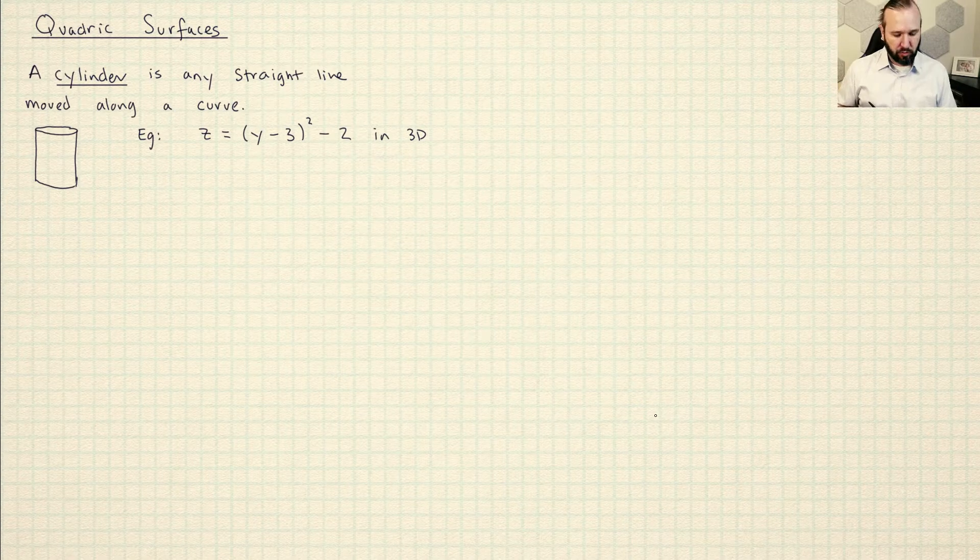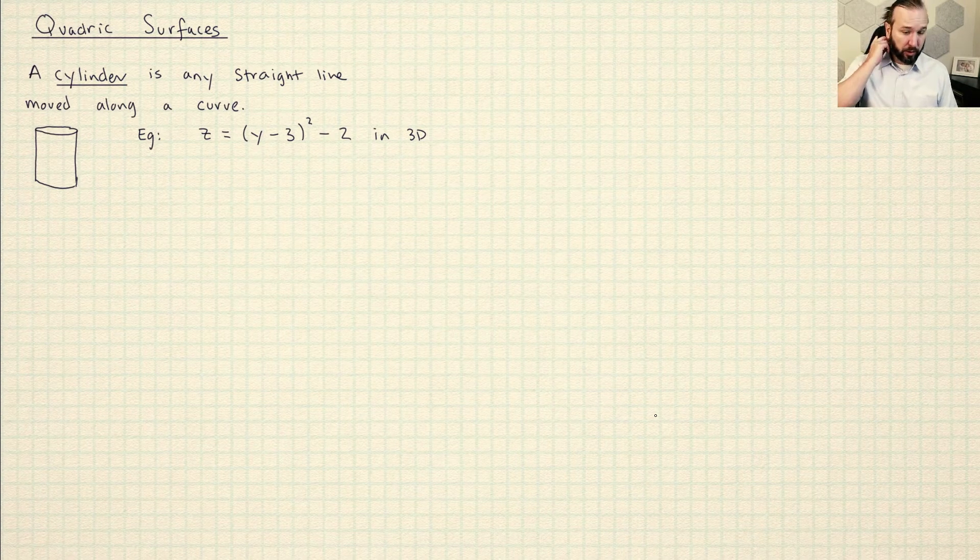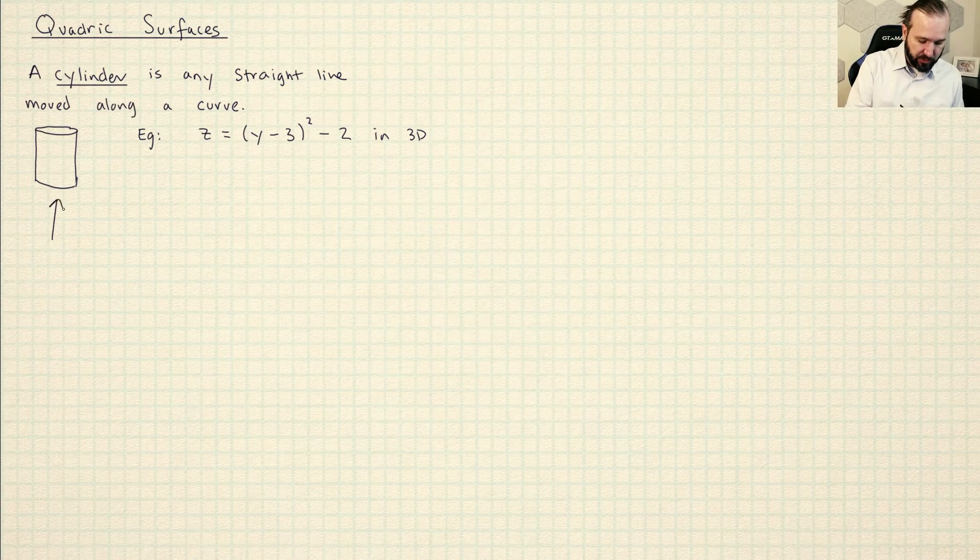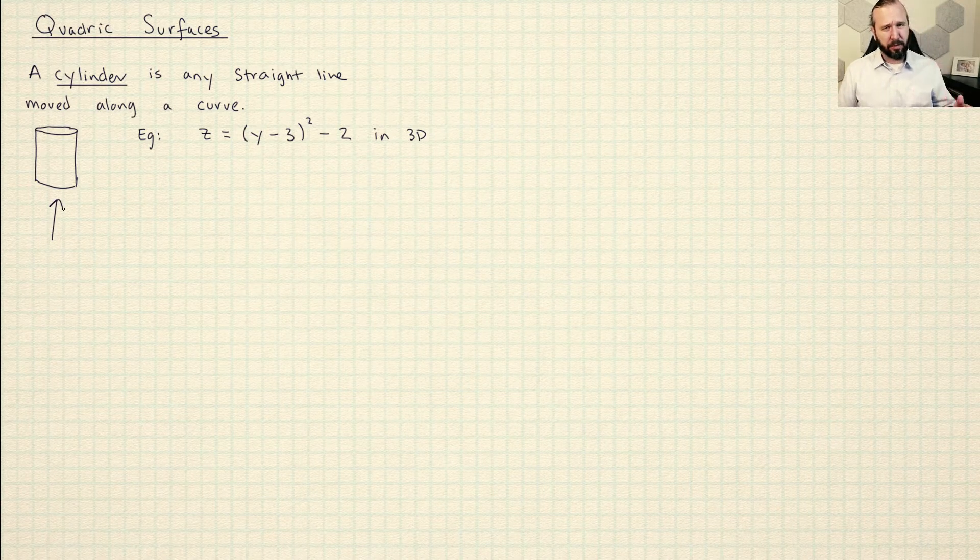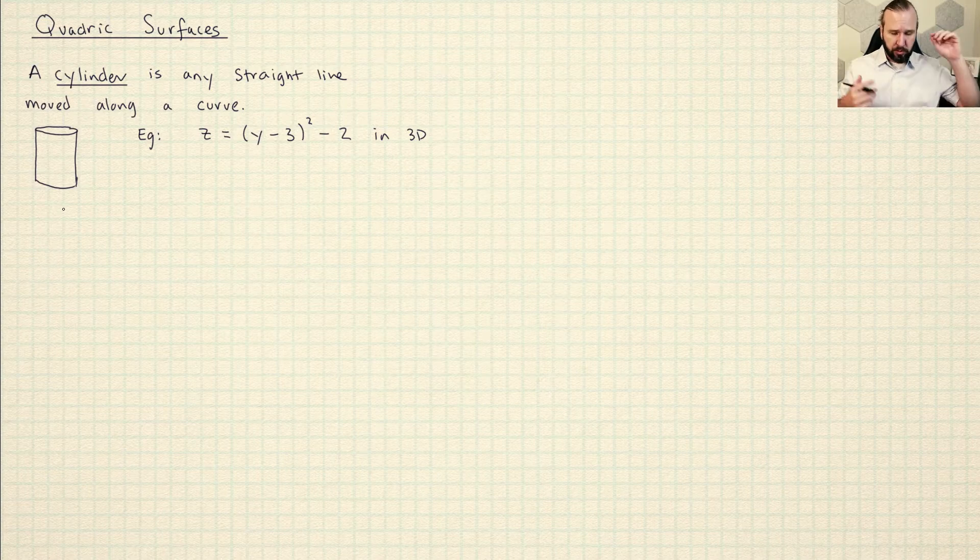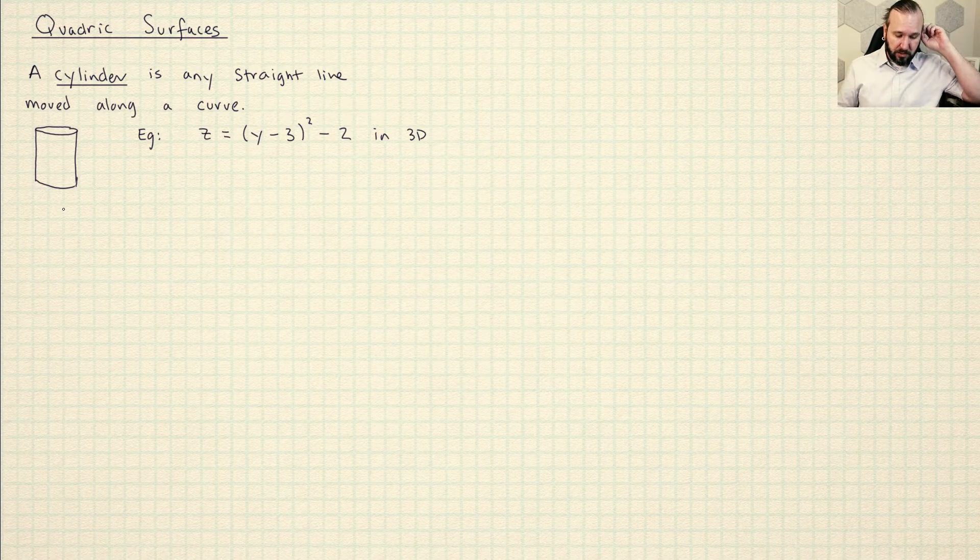A cylinder is any straight line that has been moved along a curve. So what we're used to calling a cylinder is this shape. I would probably call this a right circular cylinder just to be a little bit more specific. And our new definition of cylinder is going to allow us to include a lot more things as cylinders.